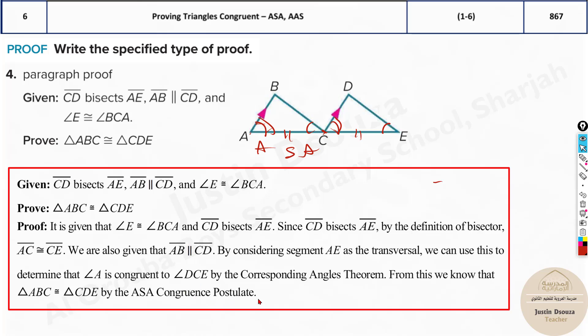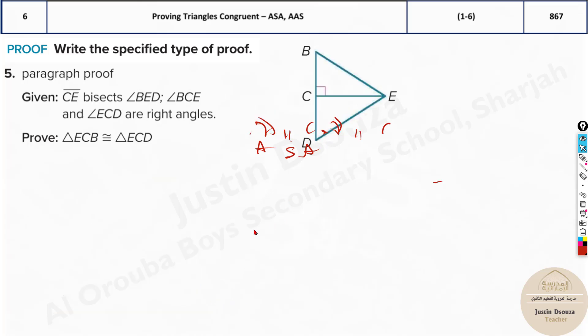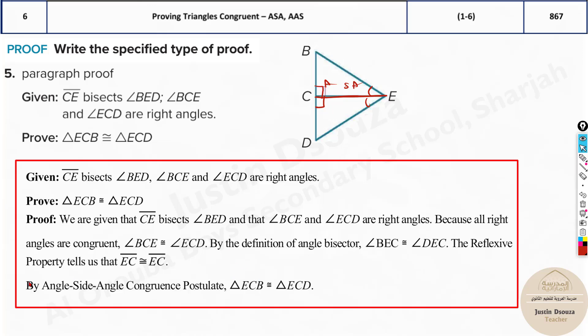There are a few more problems with the same concept you can try by yourselves. See, C is bisecting angle BED, so these both are equal to each other. This line, I can see, is a reflexive property. And if this is 90, this must be 90. So what happens? ASA postulate again. You can see this is by ASA postulate, that is angle-side-angle congruency postulate.